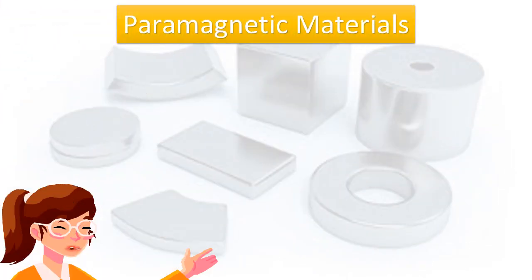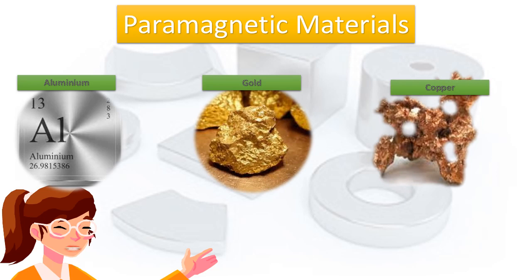Other materials show faint magnetic effects that can only be seen by highly sensitive equipment. These materials are weakly attracted to magnets and include aluminum, gold, and copper.